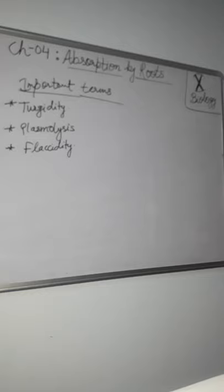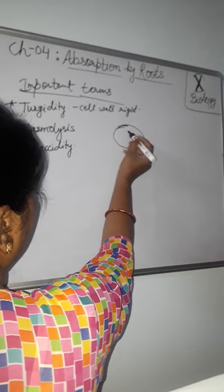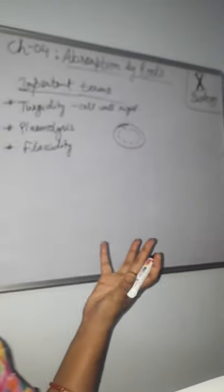Turgidity is the state of a cell in which the cell wall is rigid and stretched by the increase in the volume of vacuoles due to absorption of water. The cell is then said to be turgid. When the vacuoles inside the cell swell up and accommodate more water, the cell wall becomes rigid. That is called turgidity.